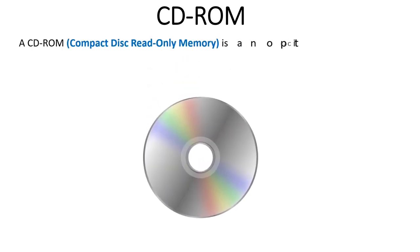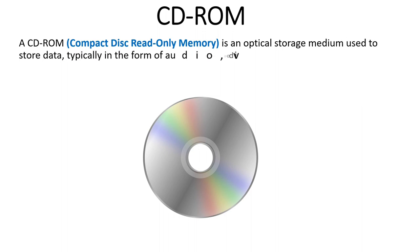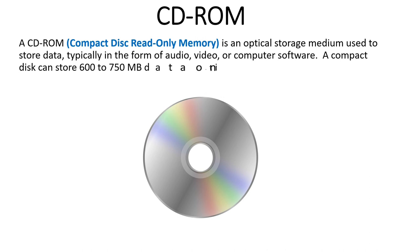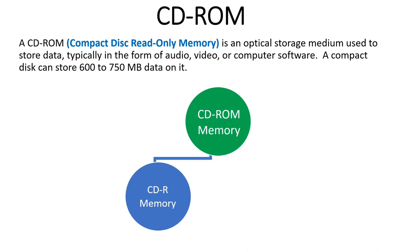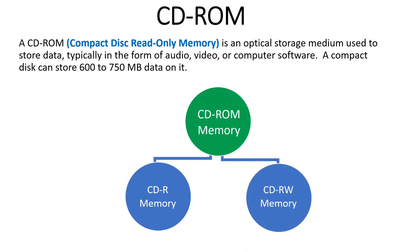The next secondary storage device is CD-ROM, which stands for Compact Disk Read-Only Memory. It is an optical storage medium that stores data permanently, with a capacity of 600 to 750 MB of data, which is less compared to other storage media. However, they are cheaper than other secondary storage devices. CD-ROM is of two types: CD-R (Compact Disk Readable), where data can be written only once and cannot be erased; and CD-RW (Compact Disk Rewritable), where data can be written more than once by erasing the previous data.